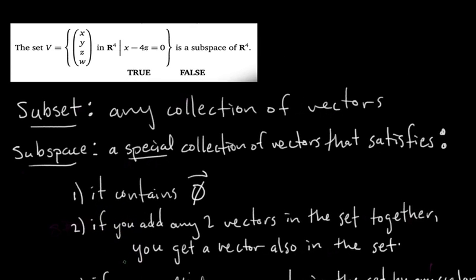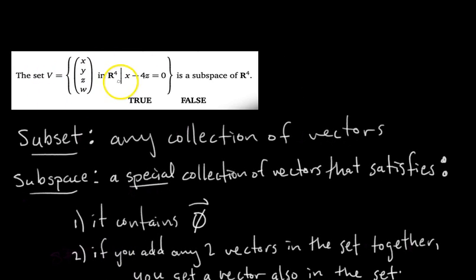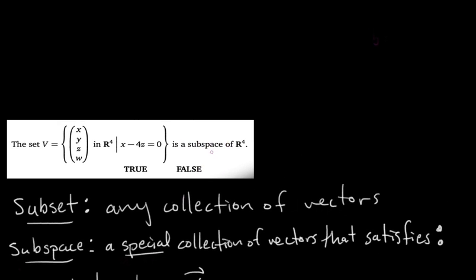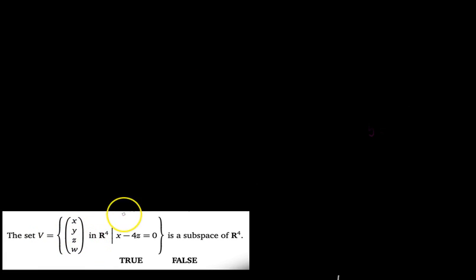So if we're given a set defined in this way, how can we determine if it's a subspace or not? The set V is defined such that for a vector, the first entry minus 4 times the third entry equals 0 — that is, x minus 4z equals 0. If that condition is met, then the vector is in the set V.